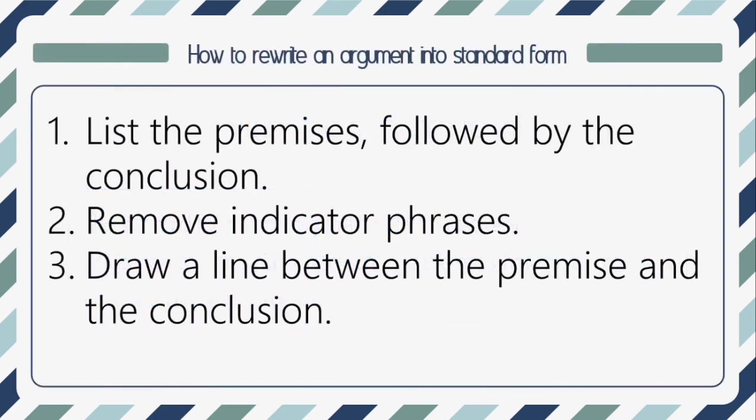How do we rewrite an argument into standard form? Here are a few guidelines: list the premises followed by the conclusion, remove indicator phrases, and draw a line between the premise and the conclusion. Truth tables take an important role in this lesson, so it is important to become familiar with the indicator phrases that we use.